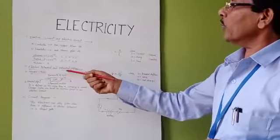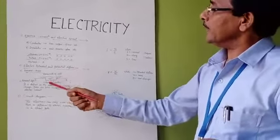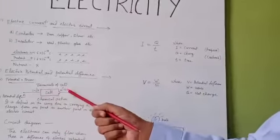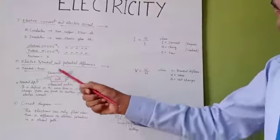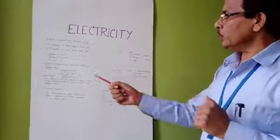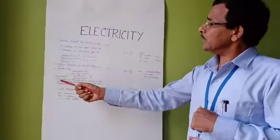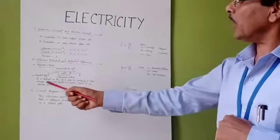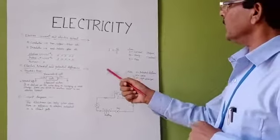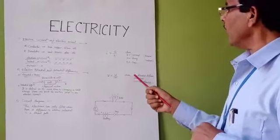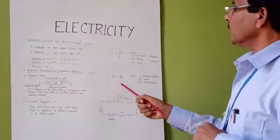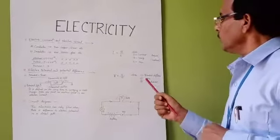In a cell, there is a negative terminal and a positive terminal. There is a chemical action inside the cell that pushes electrons through the wires. Potential difference is defined as the work done in carrying a unit charge from one point to another in an electric circuit. The formula is V = W / Q, where V is potential difference, W is work done, and Q is the net charge.